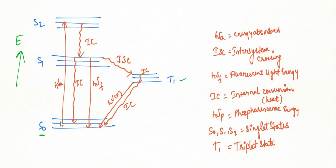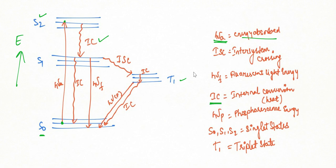Whenever we excite an electron from the singlet ground state to a higher excited singlet state, it absorbs energy h-nu-A. The possible fates of that electron are described by the Jablonski diagram. The electron can fall from S₂ to S₁ — it cannot fall directly to S₀. As it falls to S₁, it releases heat, which is called internal conversion (IC).